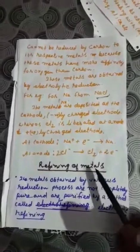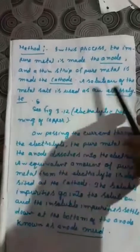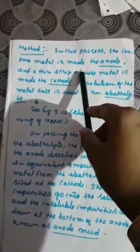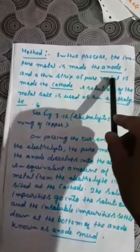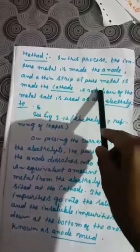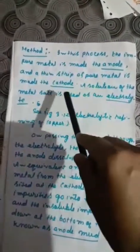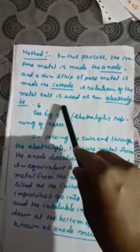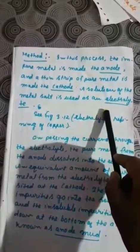Next is refining of metals. After obtaining metals by reduction methods, we must purify them — this is done by a process called electrolytic refining. In this process, the impure metal — for example, copper obtained by reduction — is made the anode. A thin strip of pure copper is made the cathode, and a solution of copper sulphate is used as the electrolyte.